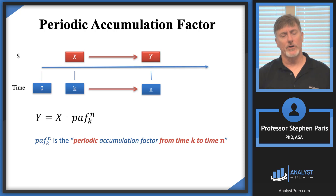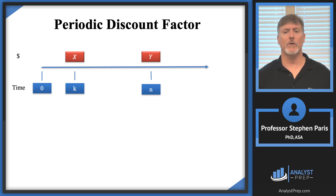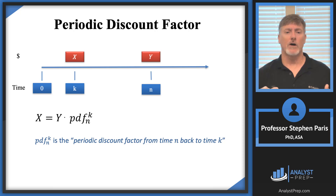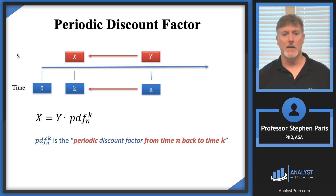Instead of accumulating, I could do the same thing with discounting. If I know CAPY and want to get CAPX, I multiply CAPY by not a periodic accumulation factor, but a periodic discount factor — the PDF from N to K. The 'F' is the factor; I'm multiplying CAPY by this factor in order to discount, and over the period from time N back to time K. So I have two factors: a periodic accumulation factor to move money forward in time, and a periodic discount factor to move money backward in time.